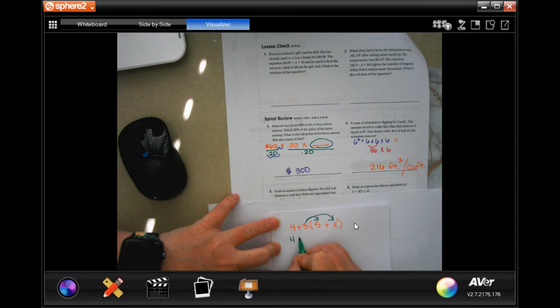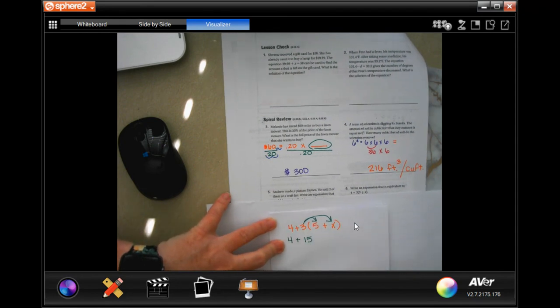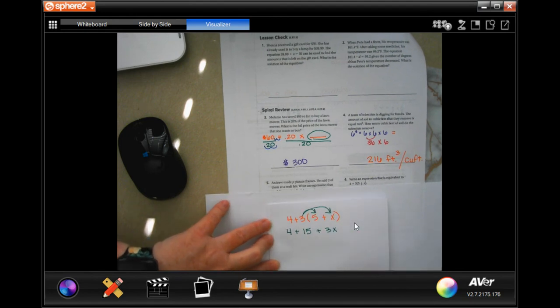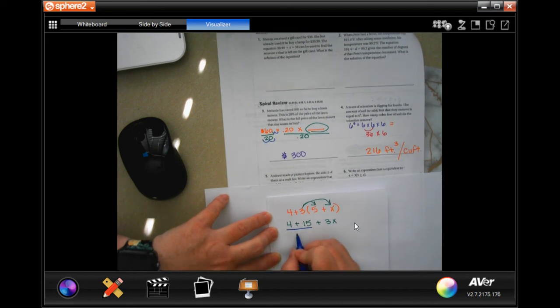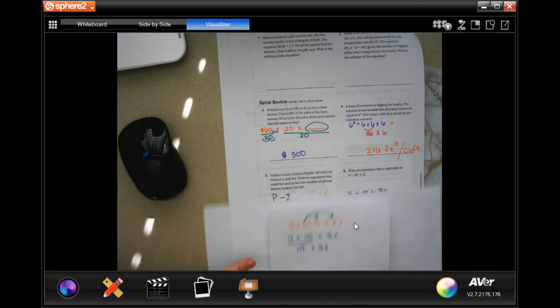So I'm still going to have 4, but now I'm going to have 3 times 5 is 15. And 3 times x is 3x. Almost done. Not quite. I have to combine my like terms. 4 plus 15 is 19. And I still have 3x. Now I'm done. Boom.